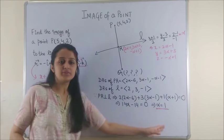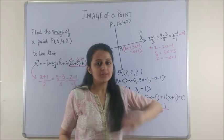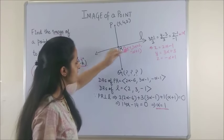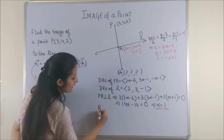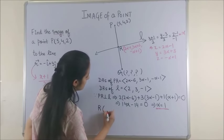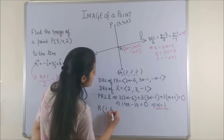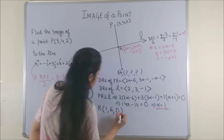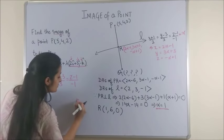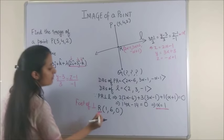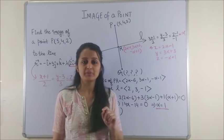The moment we get α is equal to 1, that's it, the problem is sorted because the moment you substitute the value here, you get the coordinates of R, which would be (1, 6, 0). Please note this is also known as foot of the perpendicular. So this R point is also known as foot of the perpendicular.